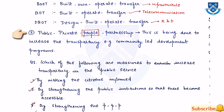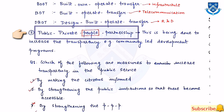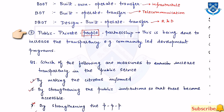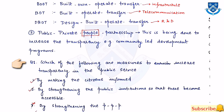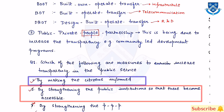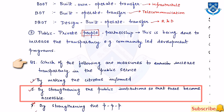The third topic is public-private-people partnership, or four P. This is done to increase transparency — for example, community-led development programs. Measures to increase transparency in public service include making citizens informed and strengthening public institutions so that they become accessible.